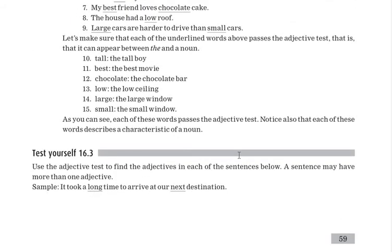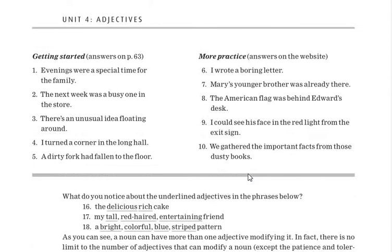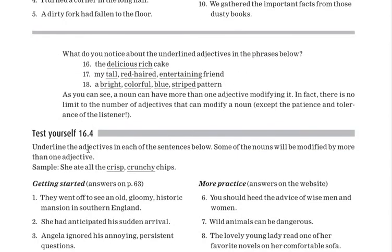Keep all these rules in mind and test yourself. Exercise 16.3 is in the book. Exercise 16.4 asks you to underline the adjective in each sentence. Note that some nouns may be modified by more than one adjective — for example, 'she ate all the crisp crunchy chips': both 'crisp' and 'crunchy' are adjectives.